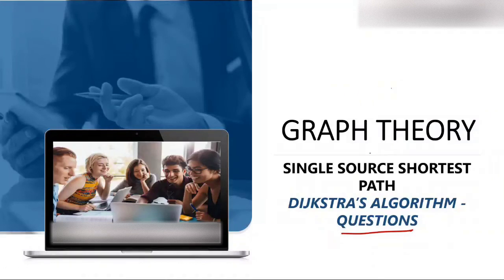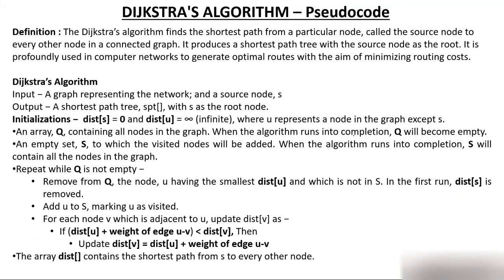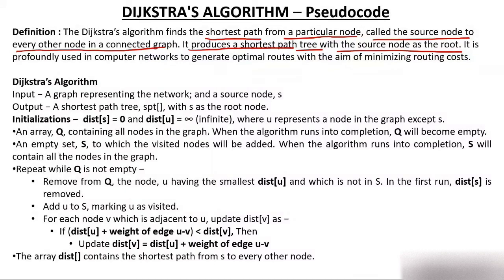Let's understand Dijkstra's algorithm. The Dijkstra algorithm finds the shortest path from a particular node — you will always be given a source node from where you have to find the shortest path to every other node in a connected graph. It produces a shortest path tree with the source node as root.